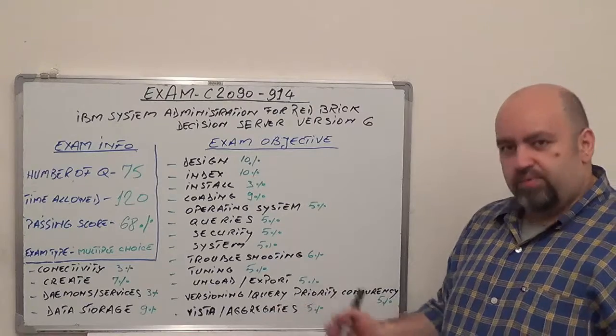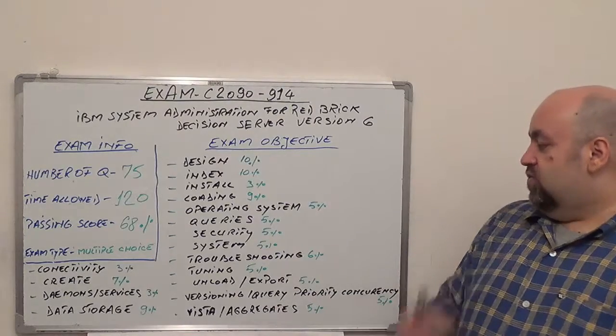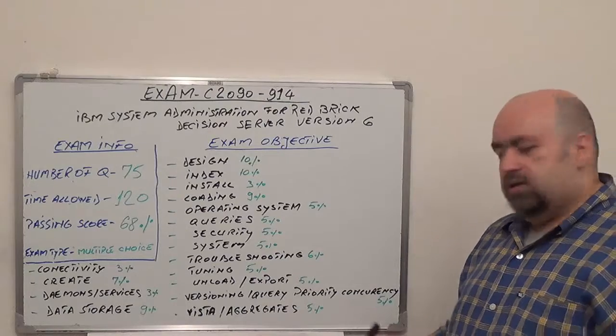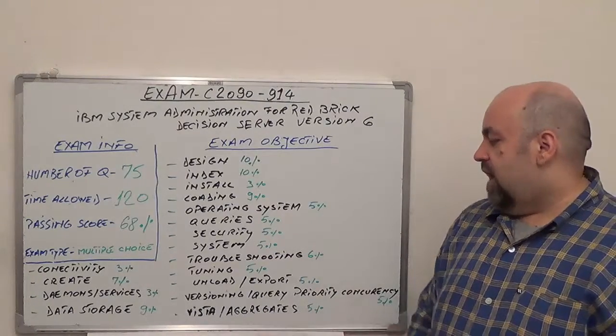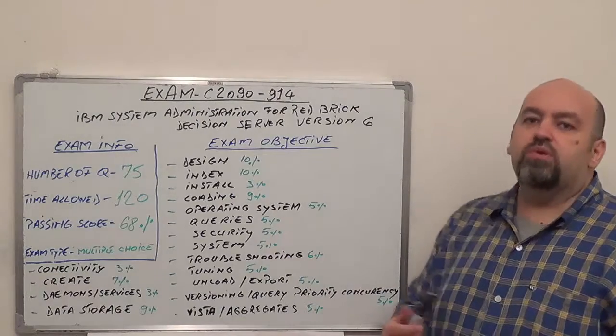Unload, export, 5% from total questions. And the last two, we have versioning, query, priority, concurrency, 5% from total questions. And the last one is Vista aggregates, 5% from total questions.